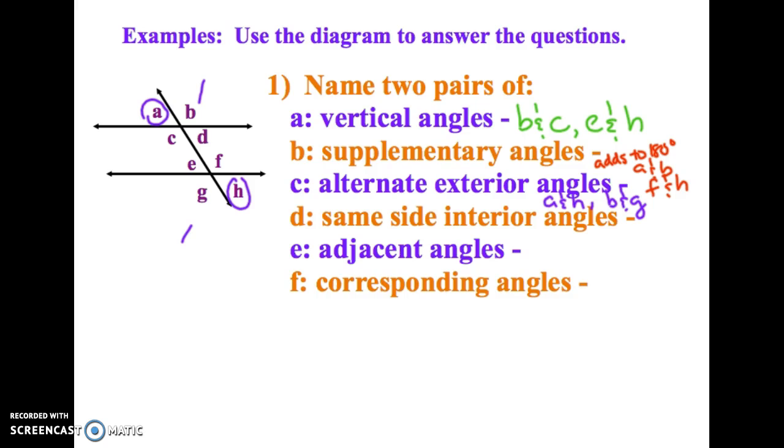Same side interior angles. So this time inside on the same side. So C and E is one choice that you could have come up with. The other choice is D and F.